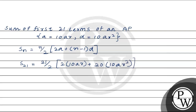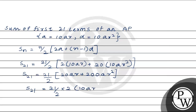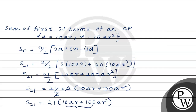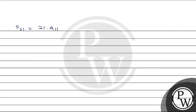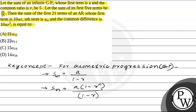Now we simplify. The sum of 21 terms of the AP equals 21 by 2 times of 20AR plus 200AR squared. We can see that 10AR is the first term and 10AR plus 10 times 10AR squared equals the 11th term, which is a₁₁. So finally, S21 equals 21 times a₁₁. This is the required sum of the first 21 terms. From the given options, Option A, which is 21·a₁₁, is the correct answer.